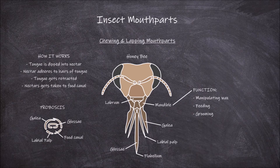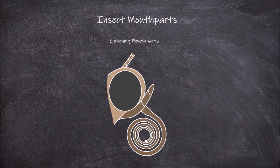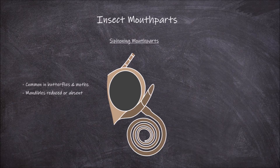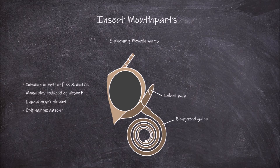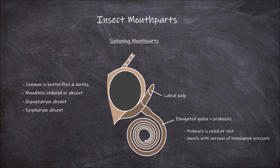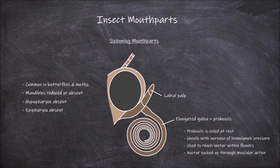Another type of variation in insect mouthparts are those specialized for siphoning. This is the common mode of feeding used by most moths and butterflies from the order Lepidoptera. In these insects the mandibles are usually greatly reduced or completely absent. The paired labium is still present on each side of the head and bears the labial palps. The hypopharynx is absent, as is the epipharynx. The galea of each maxilla are greatly elongated and modified to form the proboscis. At rest this proboscis is in a coiled position underneath the head. When in use, the proboscis uncoils using an increase in blood pressure of the haemolymph, and is used to reach nectar or other liquids, which are sucked or pumped up through the proboscis by muscular action.